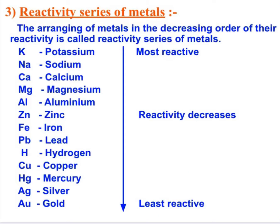Next is the reactivity series. The reactivity series is a series formed by arranging metals in decreasing order of their reactivity, determined by displacement experiments. You can see that the most reactive metals are potassium, sodium, calcium, and magnesium, whereas gold, silver, and mercury are least reactive. With the help of this reactivity series, we can study how and which metal will react in which way with different compounds.